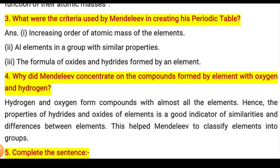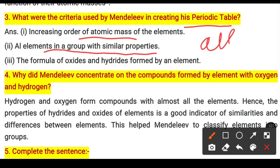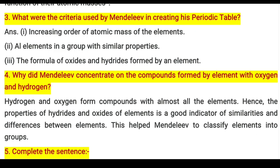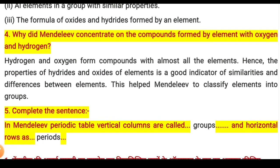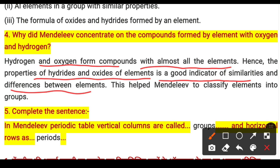Question 3: What were the criteria used by Mendeleev in creating his periodic table? He used three criteria: first, the increasing order of atomic mass; second, elements in a group with similar properties; and third, the formula of oxides and hydrides formed by each element. Question 4: Why did Mendeleev concentrate on hydrogen and oxygen compounds? Because these two elements are very reactive and form compounds with almost all elements, making the properties of hydrides and oxides good indicators of similarities and differences between elements, helping Mendeleev classify elements into groups.